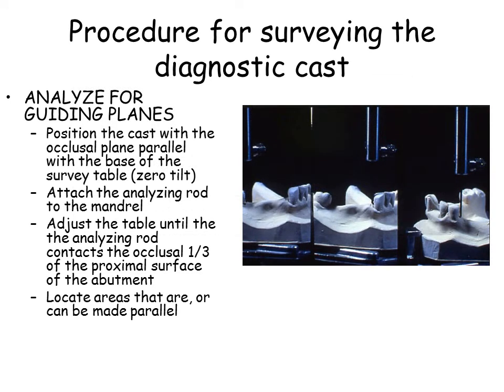43. Attach the cast to the adjustable surveyor table by means of the clamp provided. 44. Position the adjustable table so that the occlusal surfaces of the teeth are approximately parallel to the platform. 45. This is only a tentative, but practical, way to start considering the factors that influence the path of placement and removal. Determine the relative parallelism of proximal tooth surfaces by contacting proximal tooth surfaces with the surveyor blade or diagnostic stylus. 46. Alter the cast position anterior-posteriorly until the proximal surfaces are in a parallel relation to one another, or near enough that they can be made parallel by disking. This will determine the anterior-posterior tilt of the cast in relation to the vertical arm of the surveyor.